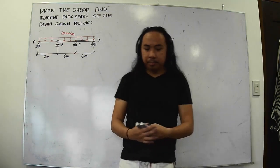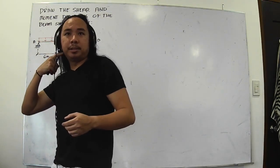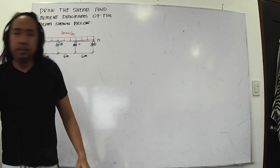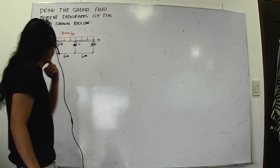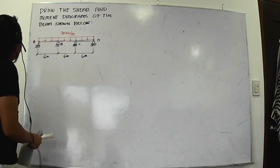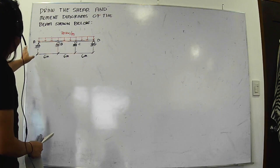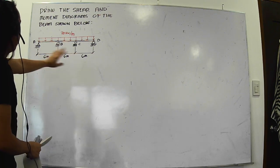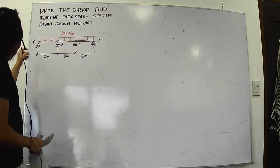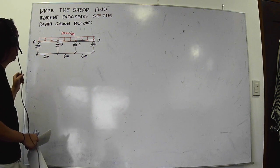Okay, so we have another problem. We are tasked to draw the shear and moment diagram on this one. We have 12 collinear supports. It's challenging.